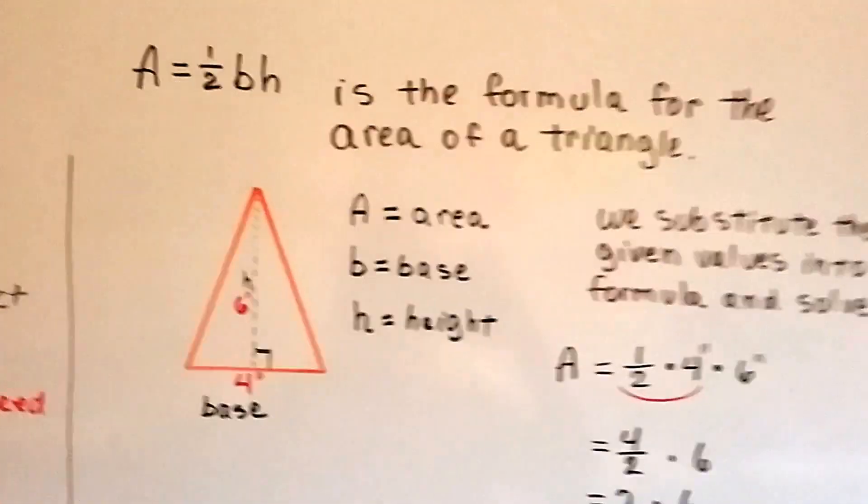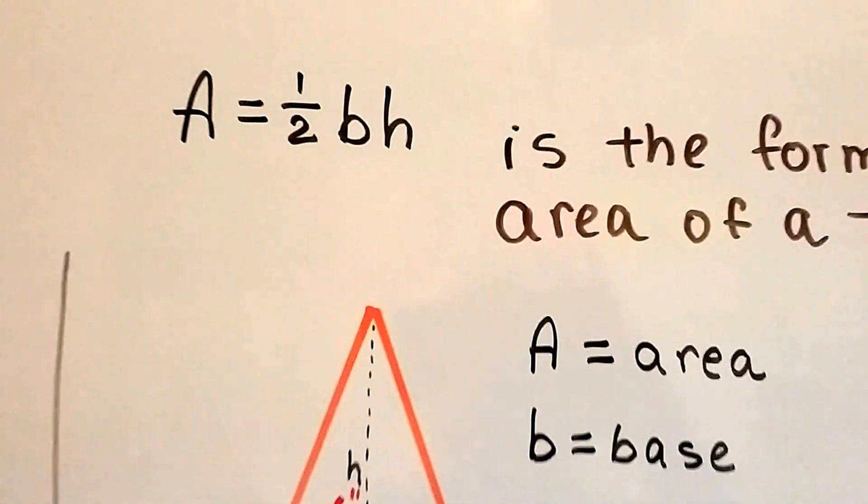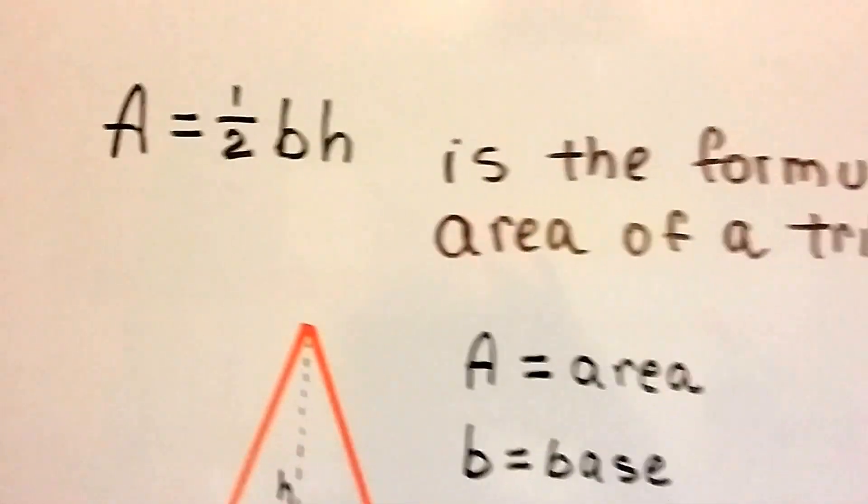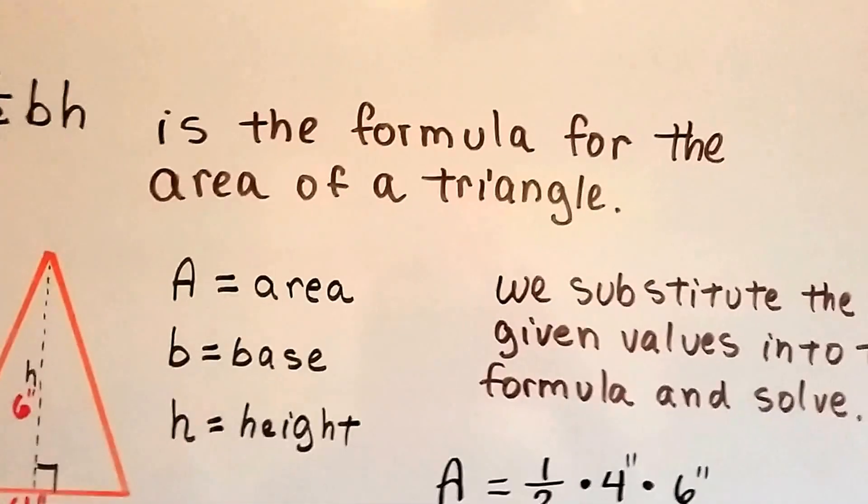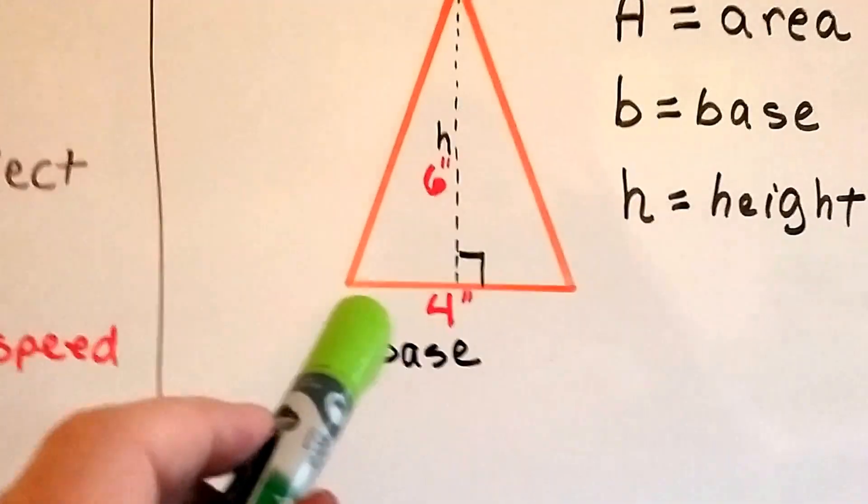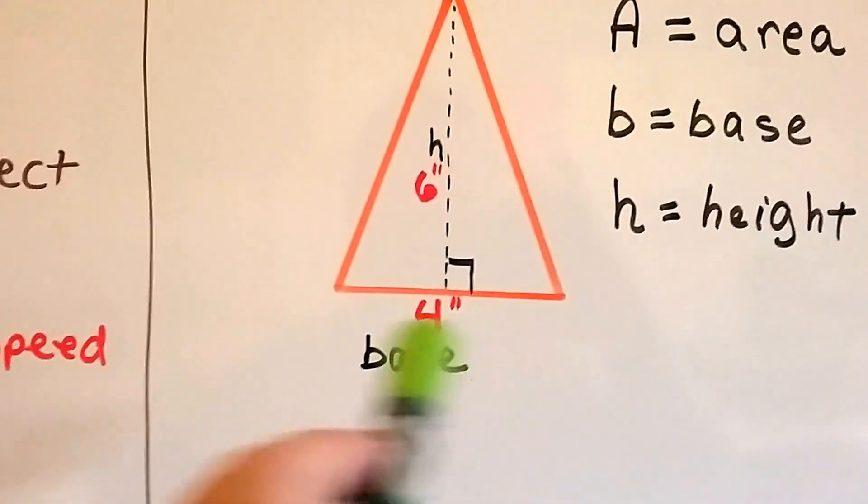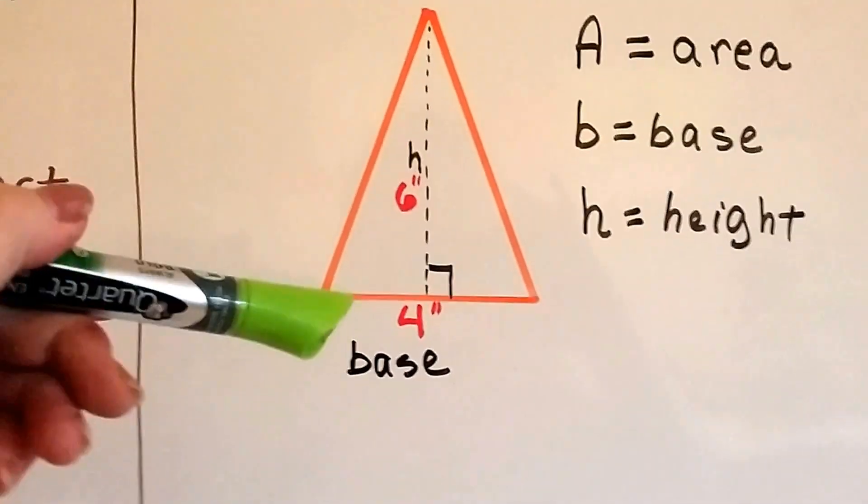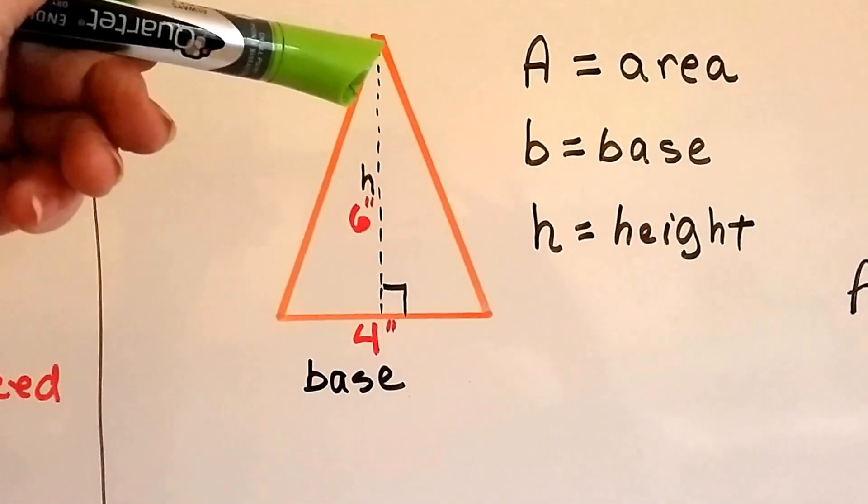Let's take a look at this one. A equals half BH. That's the formula for the area of a triangle. So here we have this triangle, and the base is down here, that's 4 inches. And the height we can see is right here, that's 6 inches.